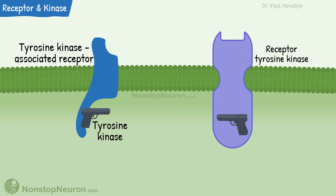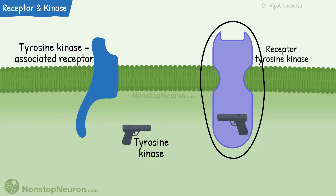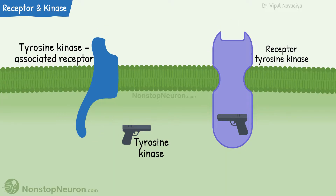Now this is confusing with receptor tyrosine kinase. The difference is receptor tyrosine kinase is a single molecule that works as a receptor as well as tyrosine kinase. Whereas in the case of tyrosine kinase associated receptors, receptor and tyrosine kinase are two separate molecules that associate with each other. The kinases that associate with these receptors are JAK, or Janus, or SRC family of kinases.